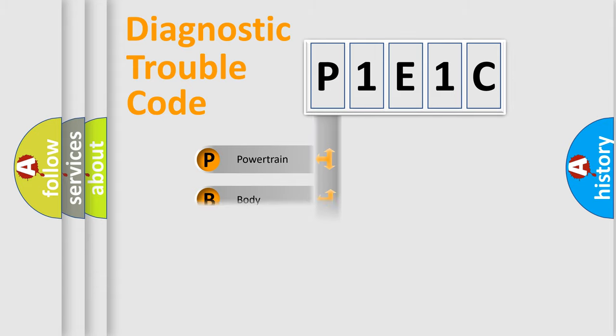Powertrain, Body, Chassis, Network. This distribution is defined in the first character code.